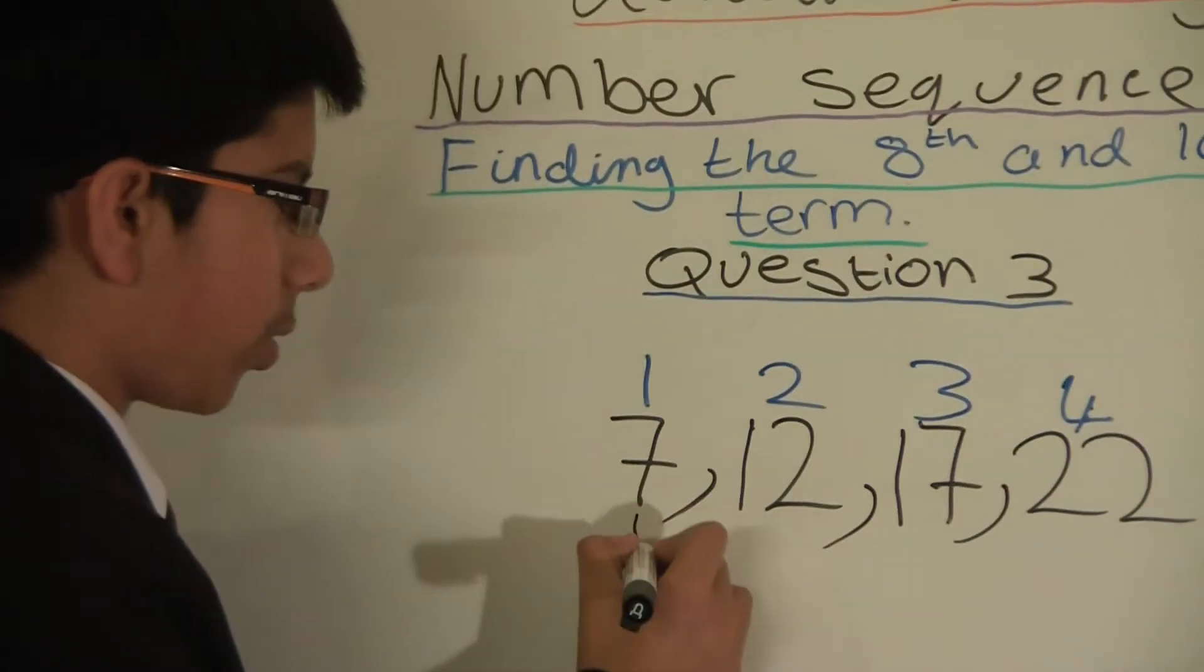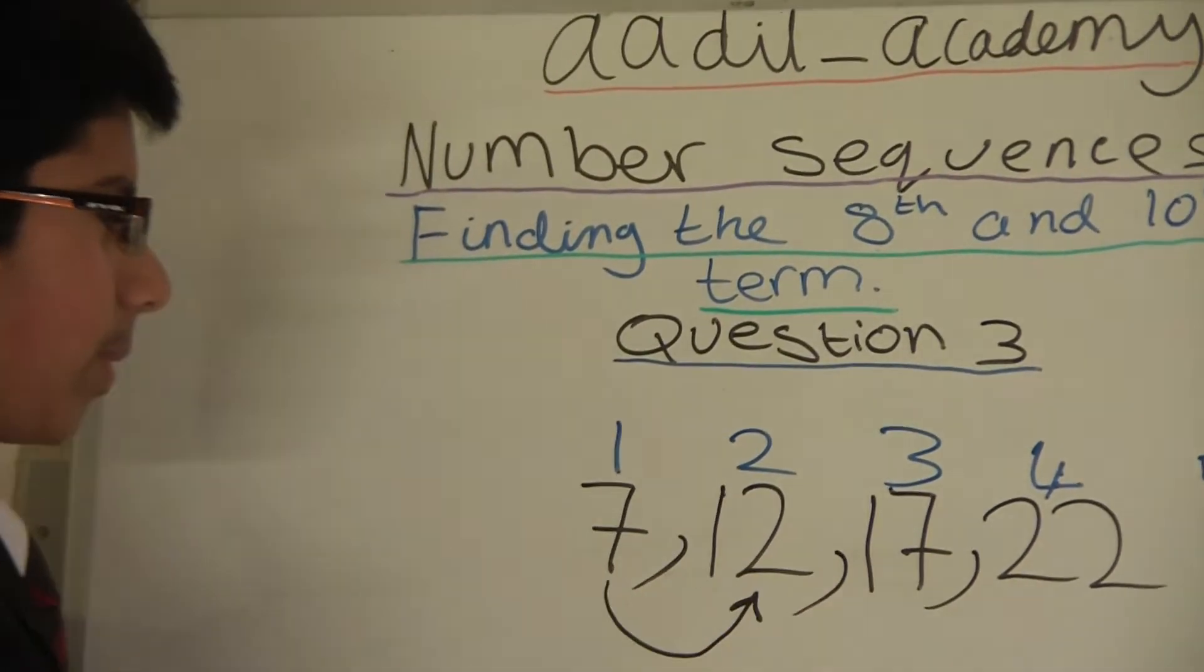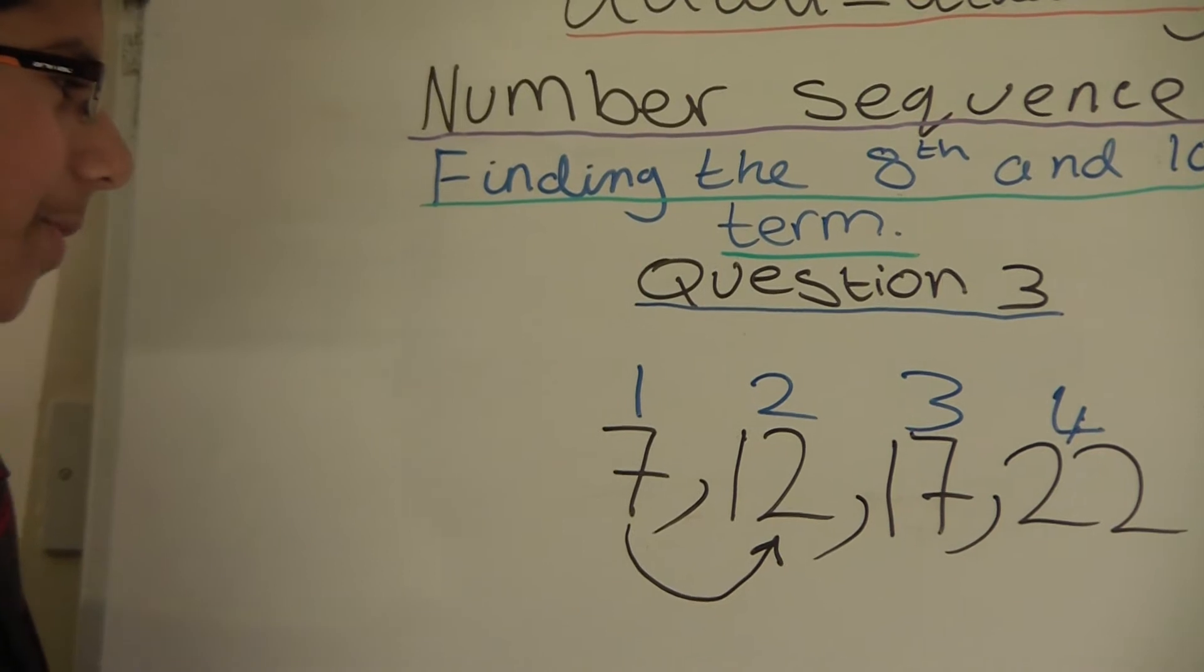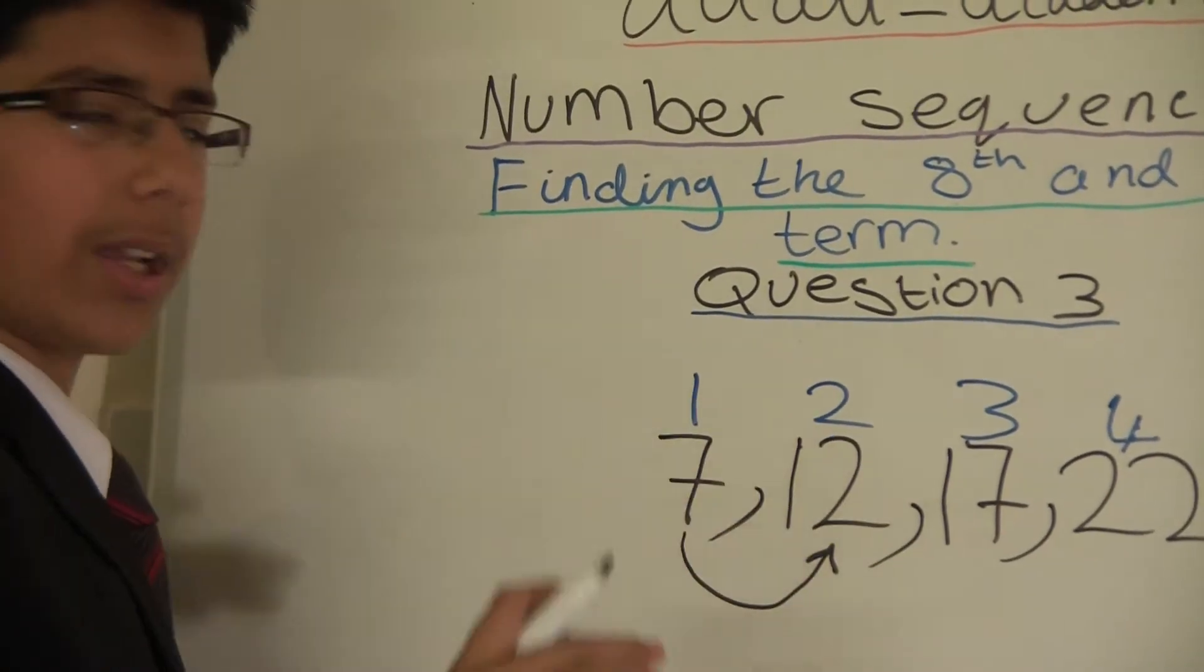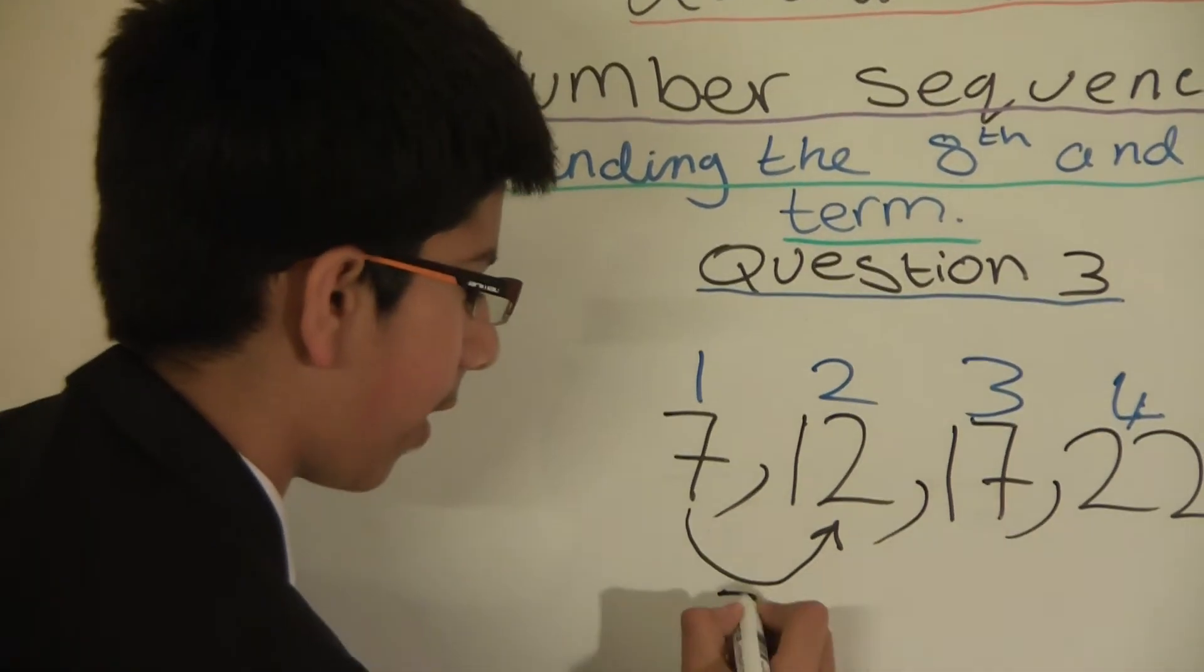So between 7 and 12 there is a difference of 5. To get from 7 to 12 you have to add 5.